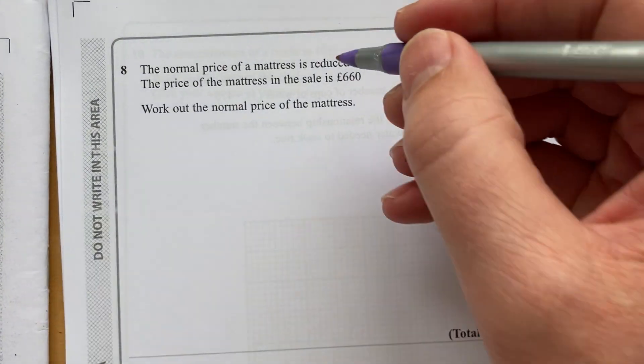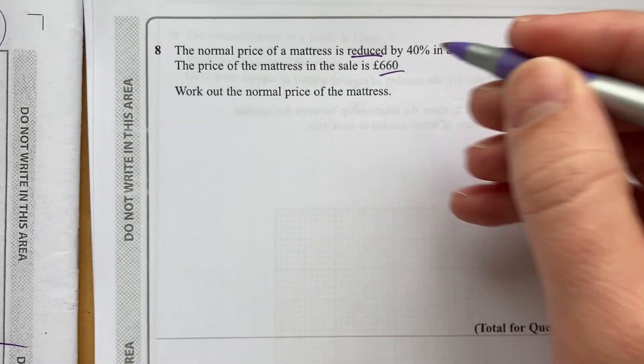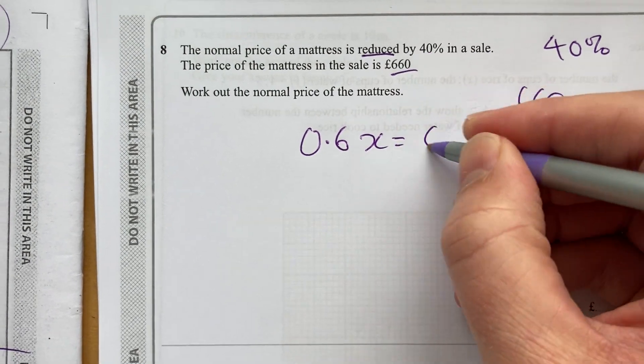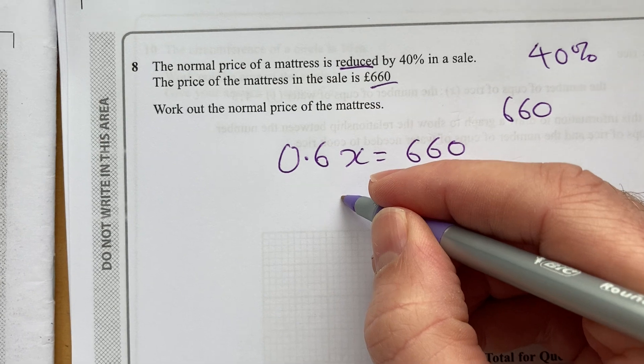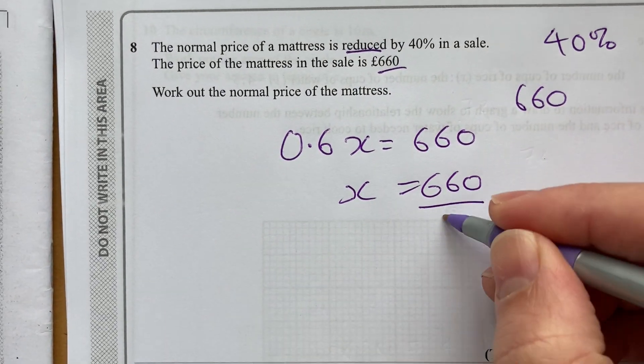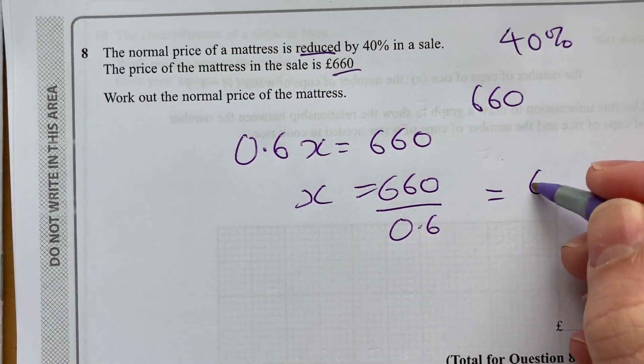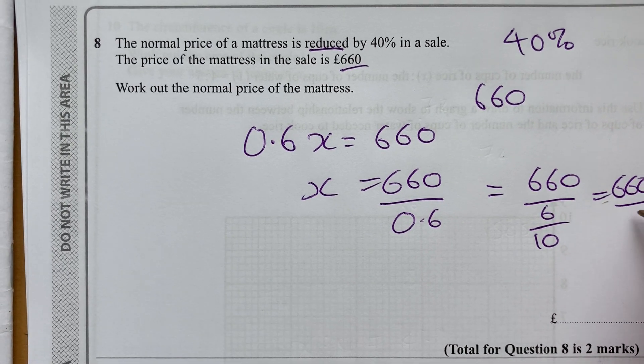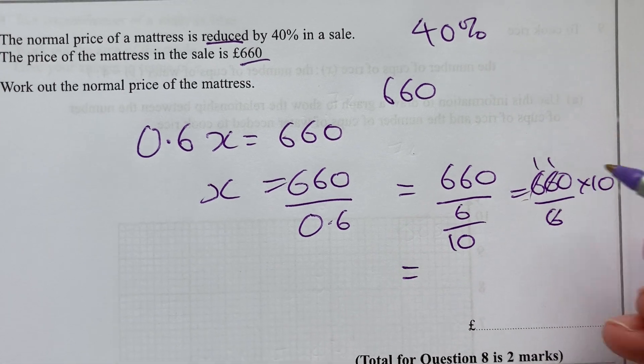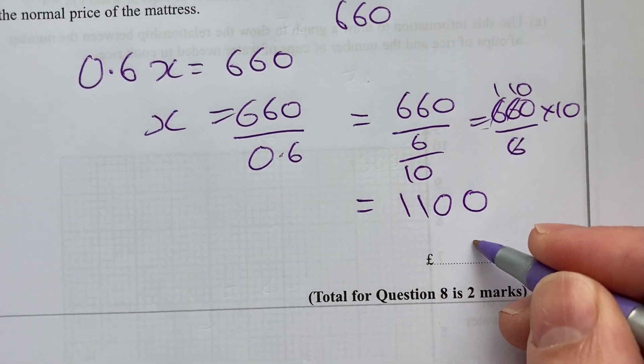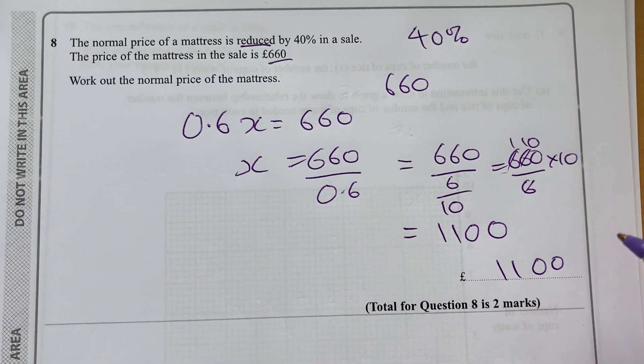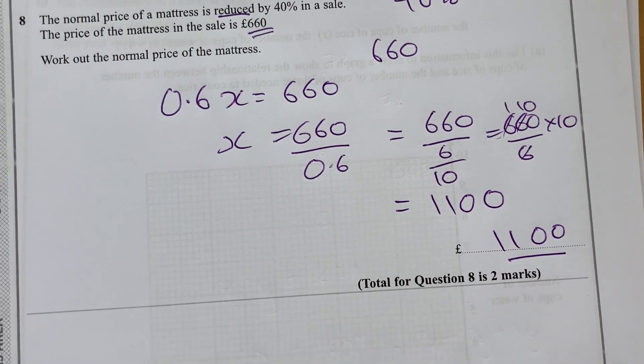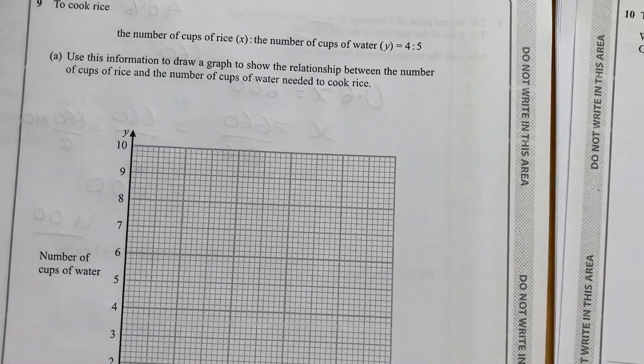Let's move on to question 8. The normal price of a mattress is reduced by 40%. The price of the mattress in the sale is 660. So I know that 0.6 of the original amount is 660. So I work out the normal price. I need to do X equals 660 divided by 0.6. So now I've got to do 660 divided by 0.6, which is then going to equal 660 times 10 over 6. Cancel those, I'm going to get 110, 1,100. So, 1,100 pounds.